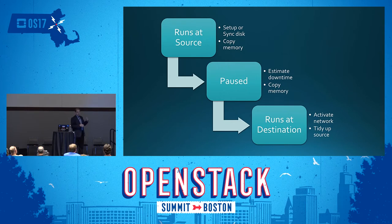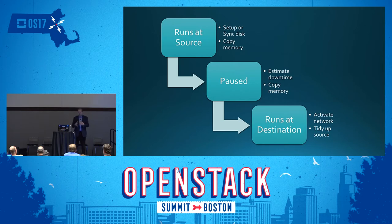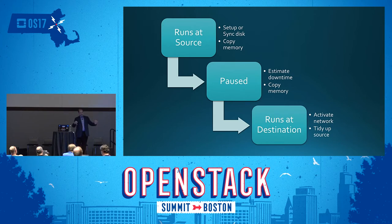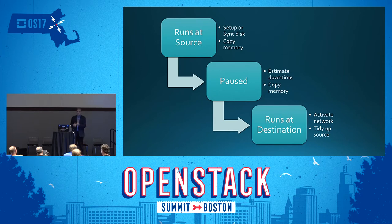For remote disks, that's sorted. The second piece is what we call block migration, where there's a local disk on the source host that we need to get to the destination host. The rough idea is that any writes on the source host get mirrored to the destination host. In the background, we copy the rest of the disk — downloading from Glance or copying across the network — and get the disk synced. So we now have all writes going to both places, the network connected, and local disks moved across.